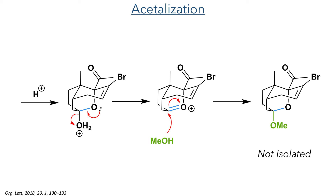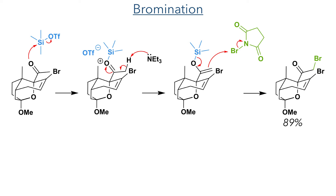First an acylal enol ether was formed using TMS triflate and triethylamine, and NBS was used to brominate the double bond, which acted as a nucleophile towards a cationic bromonium ion. Overall this sequence produced the target bromide in an 89% yield, and the structure of this compound was confirmed by X-ray crystallography.